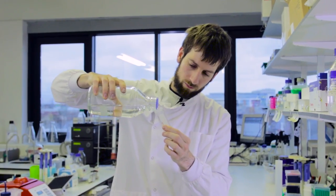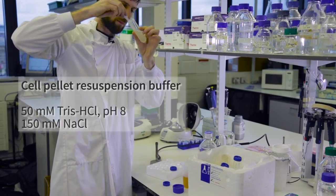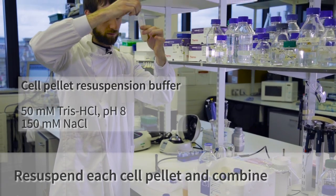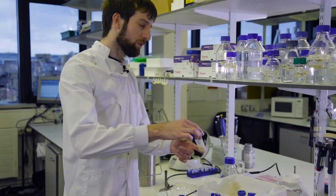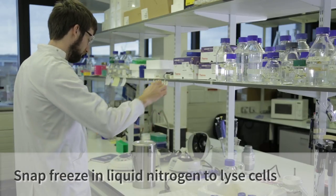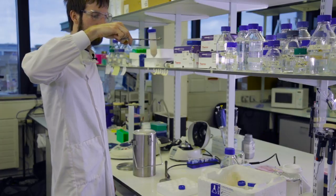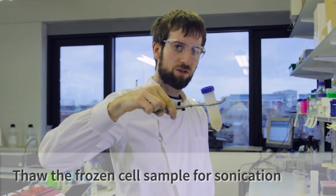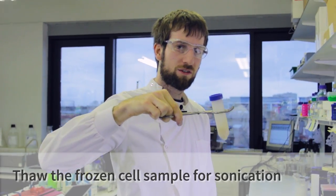We're going to resuspend the pellet using a buffer. Now we've resuspended all of the cells and we're going to snap freeze it in liquid nitrogen to lyse open the cells and break our protein away from the cells. We have snap frozen cells and protein, hopefully starting to burst open the cells. We need to thaw this so that we can go to the next stage of lysis, sonication.